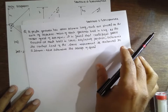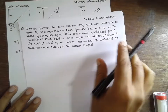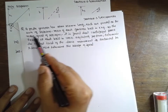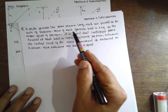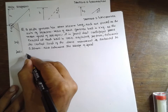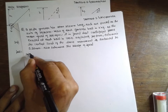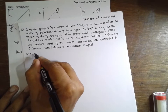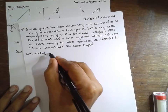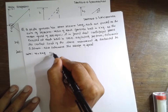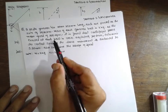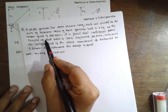This is the problem given. The Porter governor has an arm of 250 mm long. Each arm is pivoted on the axis. The mass of each governor ball is 2 kg. Mass m is equal to 2 kg. At the mean speed, mean speed n is equal to 200 rpm. Minimum speed will be n1, maximum will be n2.